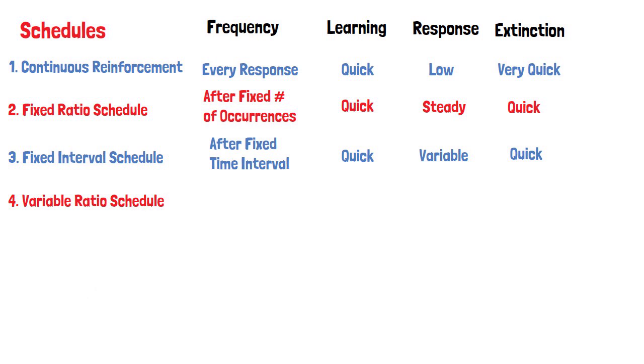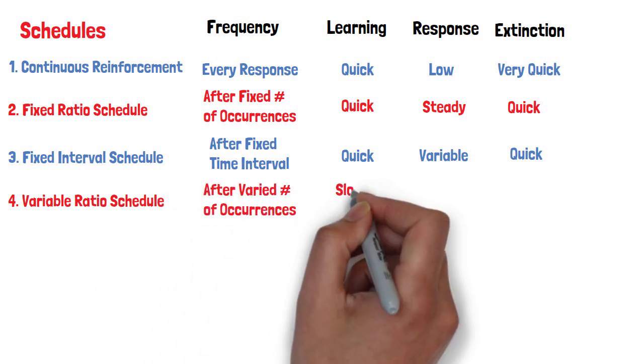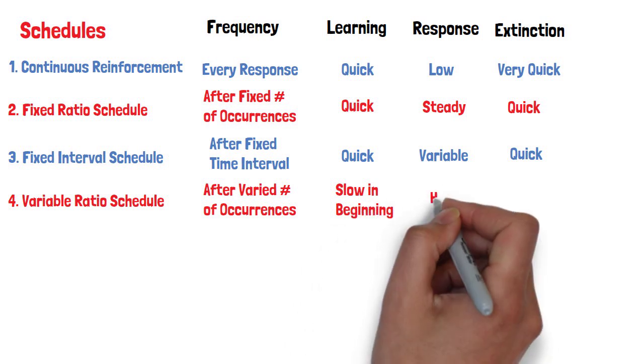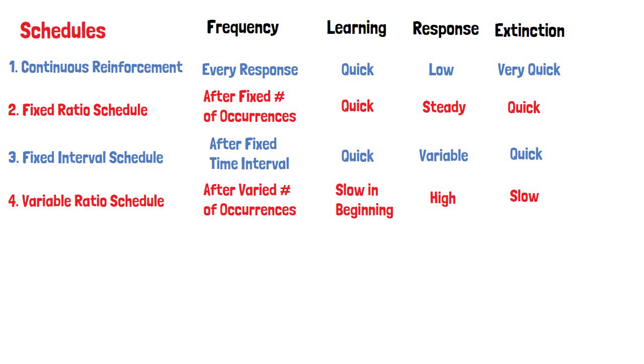Variable ratio schedules are also a type of partial reinforcement that involve reinforcing behavior after a varied number of responses. This leads to both a high response rate and slow extinction rates.